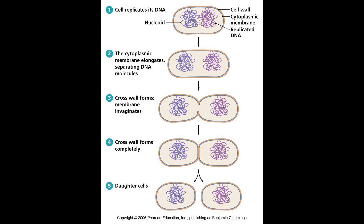Binary fission starts when the chromosome begins to replicate at this site, producing two separate copies of the origin site. Quickly thereafter, while the chromosome is still replicating, one origin moves towards the opposite end of the cell. Once replication is complete, the plasma membrane pinches inward towards the middle, dividing the cell in two. This results in proper segregation of the chromosome, ensuring that each daughter cell inherits one genome.